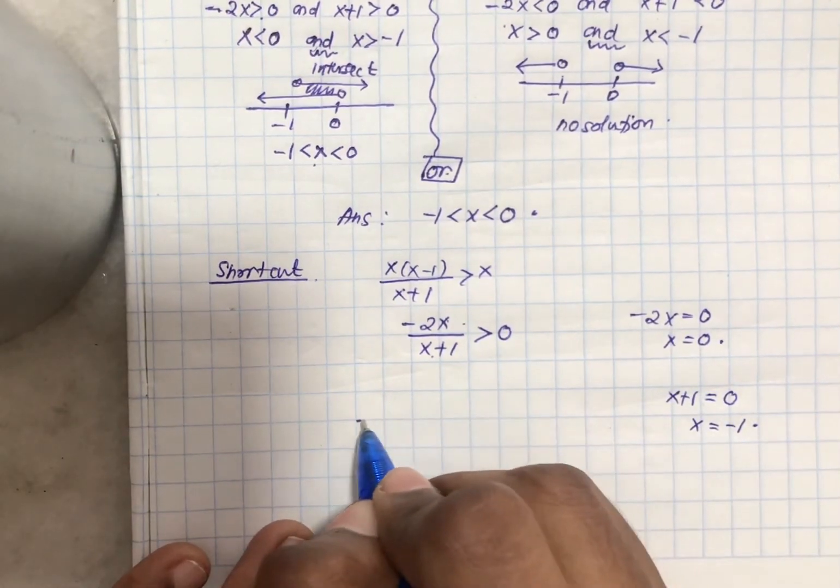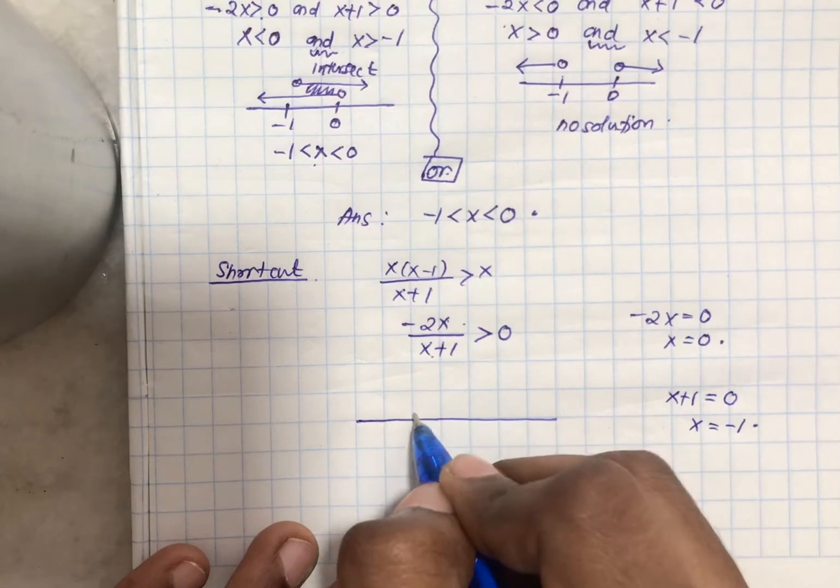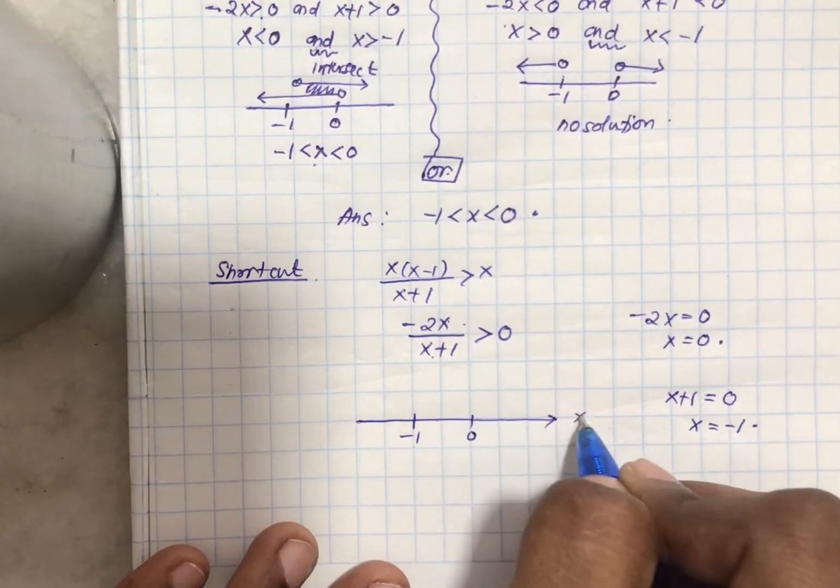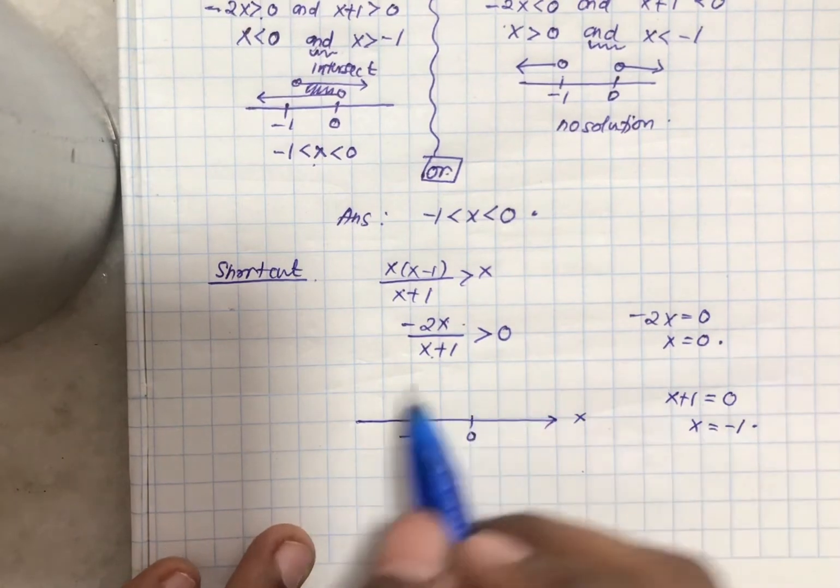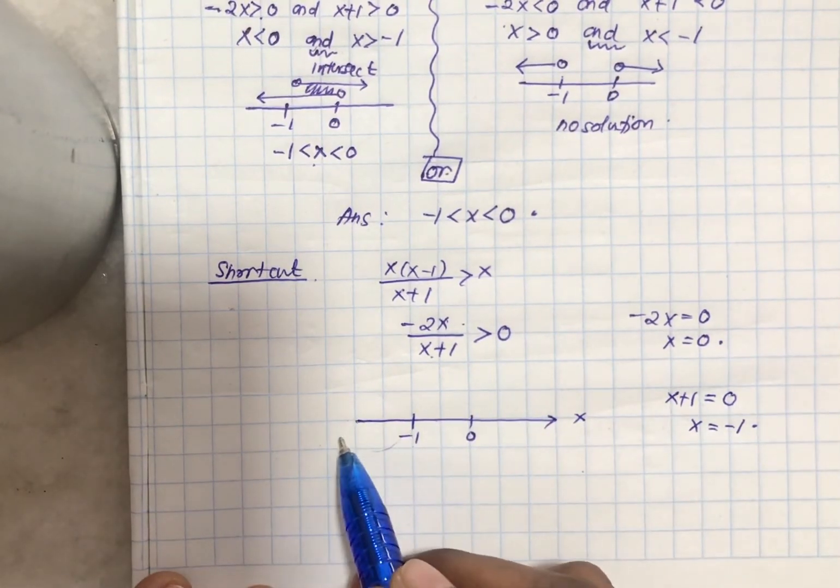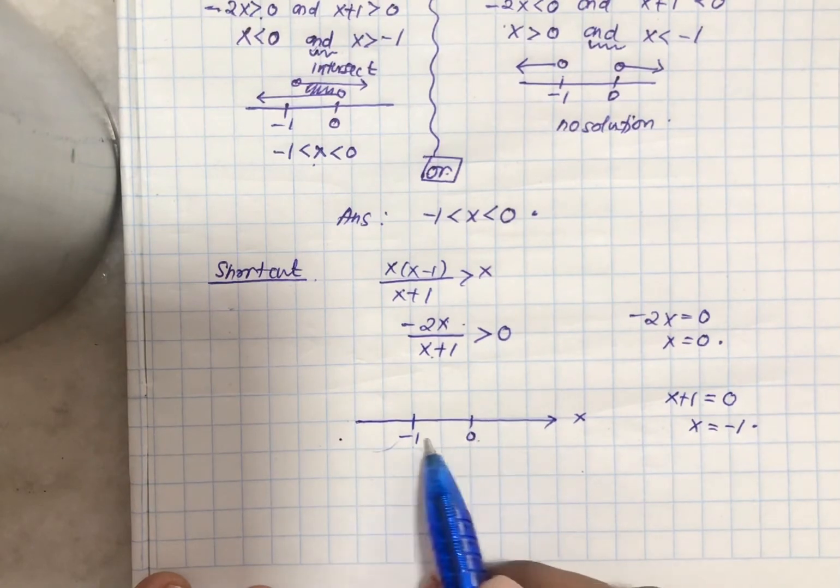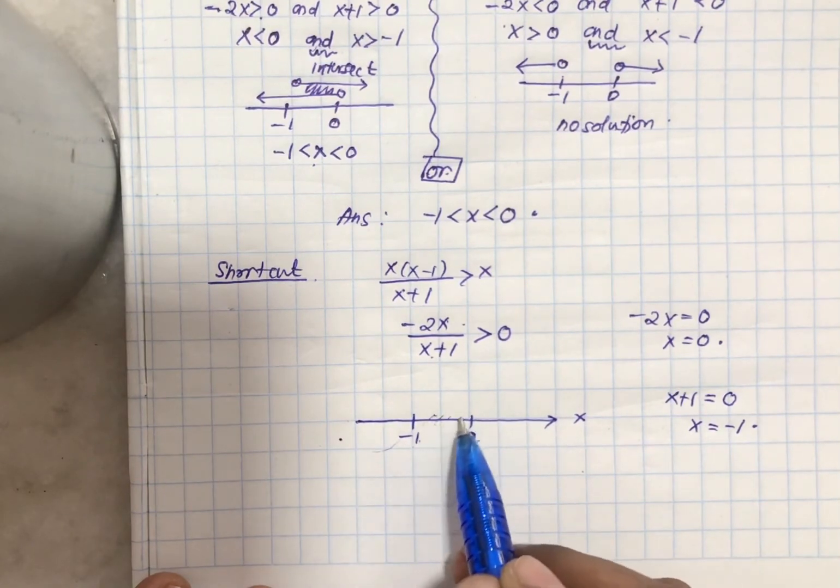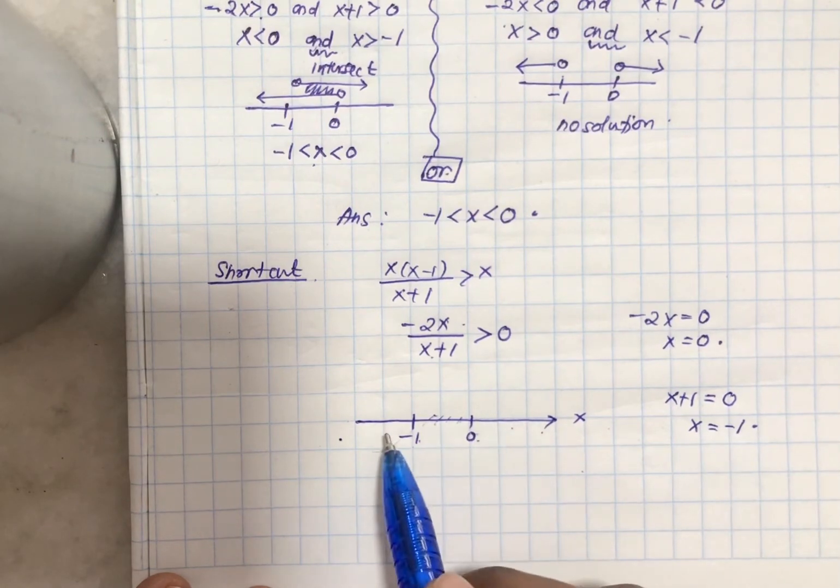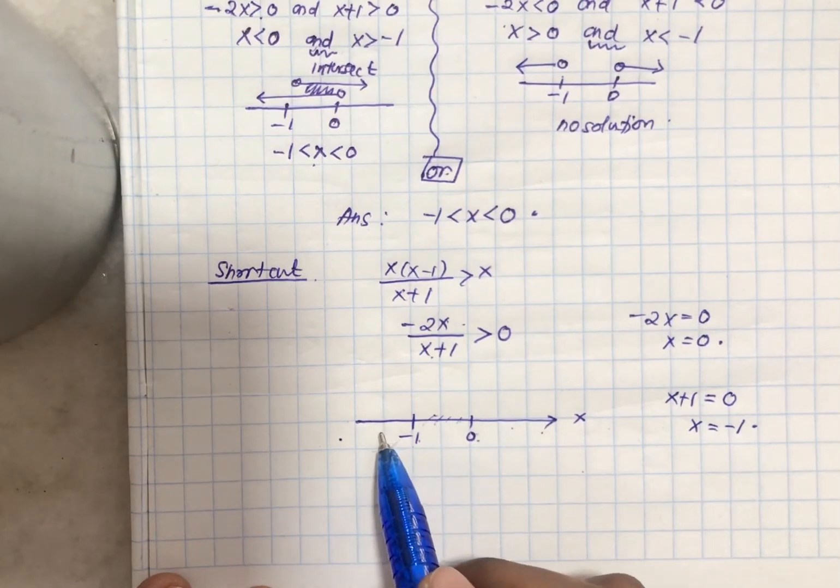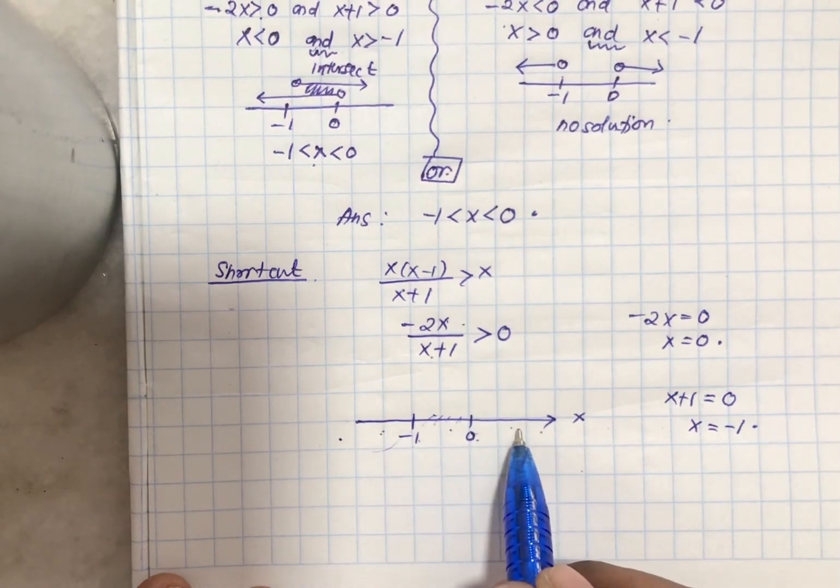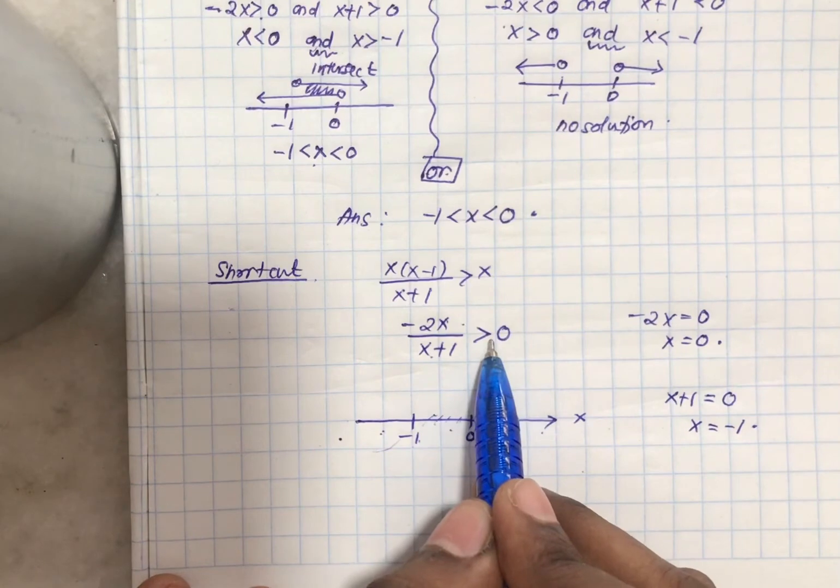Then you draw the number line. When you are drawing the number line, we are going to do inspection. So I know negative 1 is here, 0 is here and this is my x axis. See the inequality here is x less than negative 1 and here it is in between 0 and negative 1. So what I am going to do, I am going to do inspection by taking a few values from here and I am going to check whether I will get positive or not.